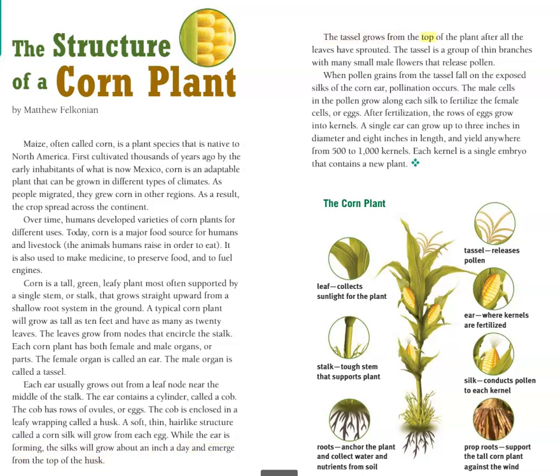The tassel grows from the top of the plant after all the leaves have sprouted. The tassel is a group of thin branches with many small male flowers that release pollen. When pollen grains from the tassel fall on the exposed silks of the corn ear, pollination occurs. The male cells in the pollen grow along each silk to fertilize the female cells, or eggs.